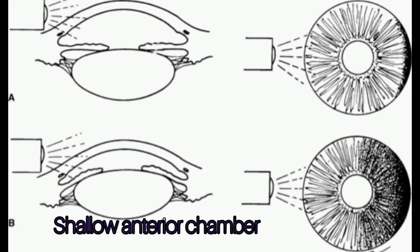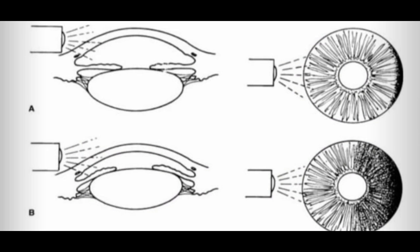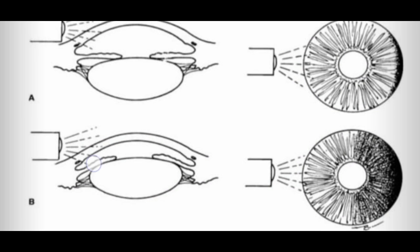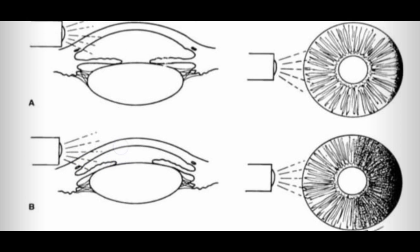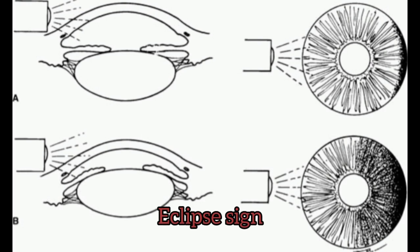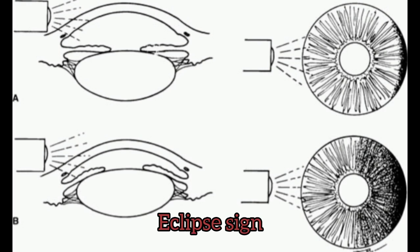In the case of a very shallow anterior chamber, the iris lies forward, blocking some of the light, and very little of the iris is illuminated. This is known as the Eclipse sign.